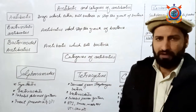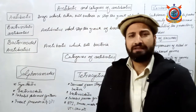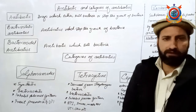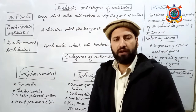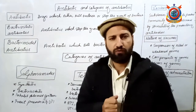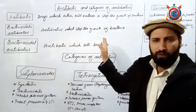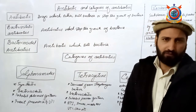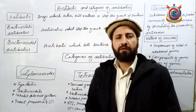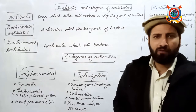Antibiotic broadly دو قسم کے ہوتے ہیں۔ ایک کو کہا جاتا ہے bacteriostatic antibiotic اور دوسرے کو کہا جاتا ہے bacteriocidal antibiotic۔ Bacteriostatic antibiotic وہ ہے which stops the growth of bacteria - یعنی bacterial reproduction کو روکتا ہے۔ Bacteriocidal antibiotic وہ ہے which kills bacteria - bacterial cell کو destroy کرتا ہے۔